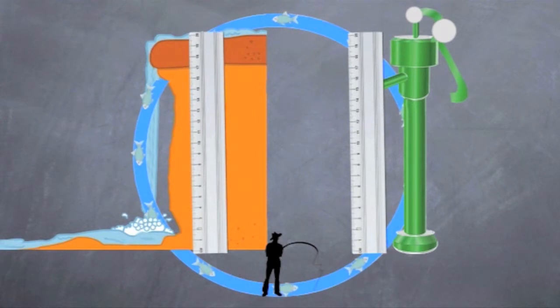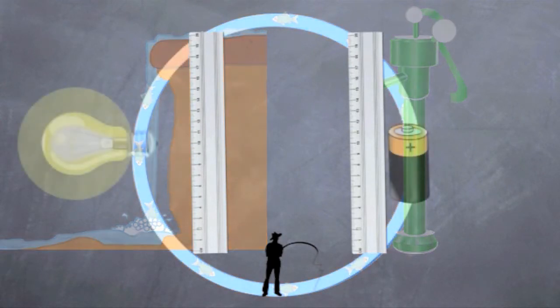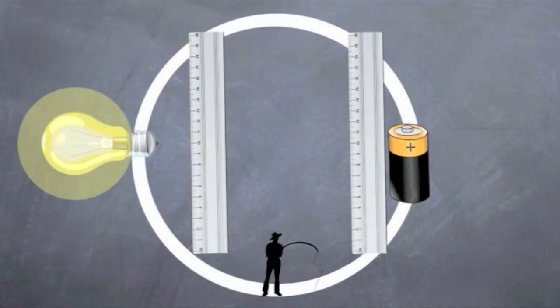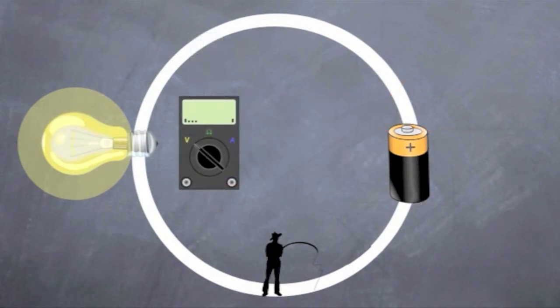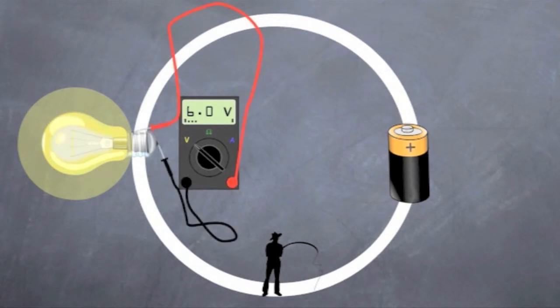Now that you've got the analogy, let's go back to our circuit. The first height was the voltage of the battery, 6V in this example. And the second height was the voltage on our light bulb, which is the same.